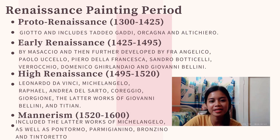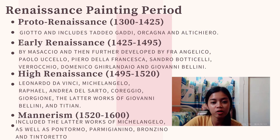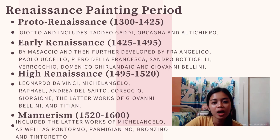First is the Proto-Renaissance, which began with the professional life of the painter Giotto, and includes Duccio and Cimabue. Next is the Early Renaissance style, started by Masaccio and further developed by Fra Angelico, Paolo Uccello, Piero della Francesca, Sandro Botticelli, Domenico Ghirlandaio, and Giovanni Bellini. Next is the High Renaissance period, led by Leonardo da Vinci, Michelangelo, Raphael, Andrea del Sarto, Correggio, Giorgione, and the latter works of Giovanni Bellini and Titian. The last is the Mannerist period, which included the latter works of Michelangelo, as well as Pontormo, Parmigianino, Bronzino, and Tintoretto.